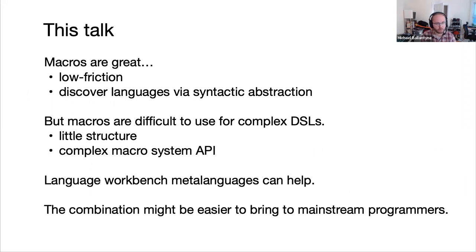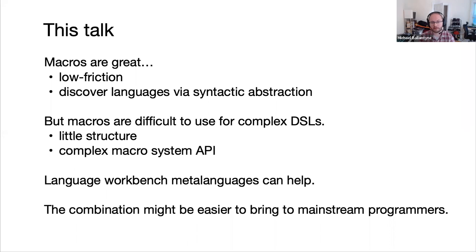This talk will give a picture of what we love about macros, but also tell you about places where it becomes difficult to make really sophisticated languages with macros — particularly when you stop trying to reuse parts of the host language and instead build something custom that is rather different from it. Those kinds of macros turn into a big compiler written as a single macro, which can be a really complex piece of code without much structure, forced to use the host macro system API that is very complex.